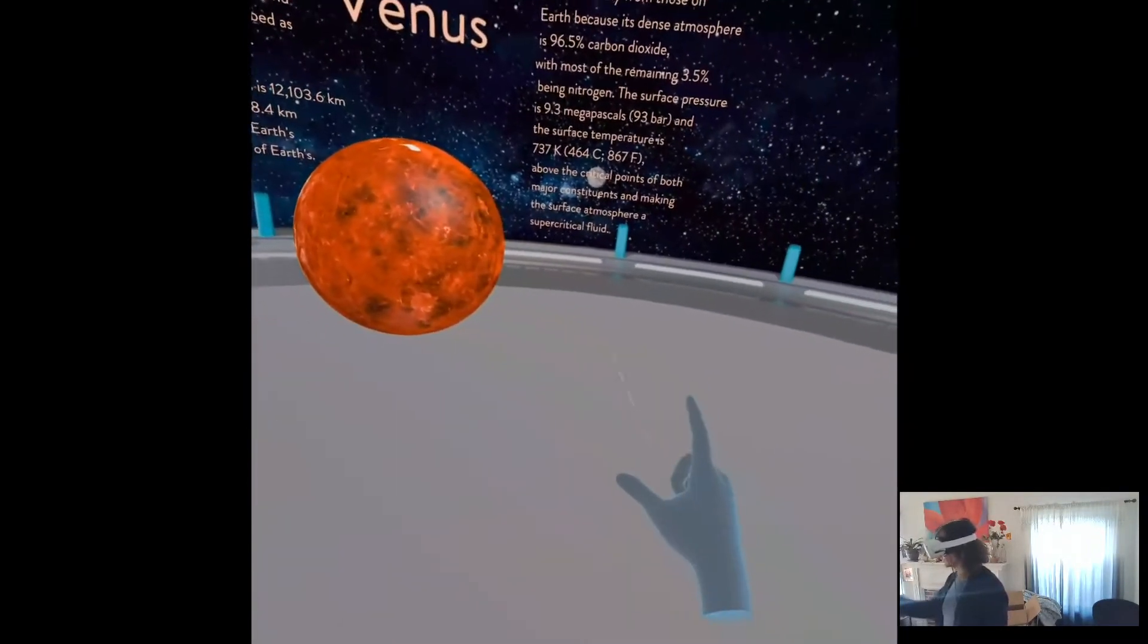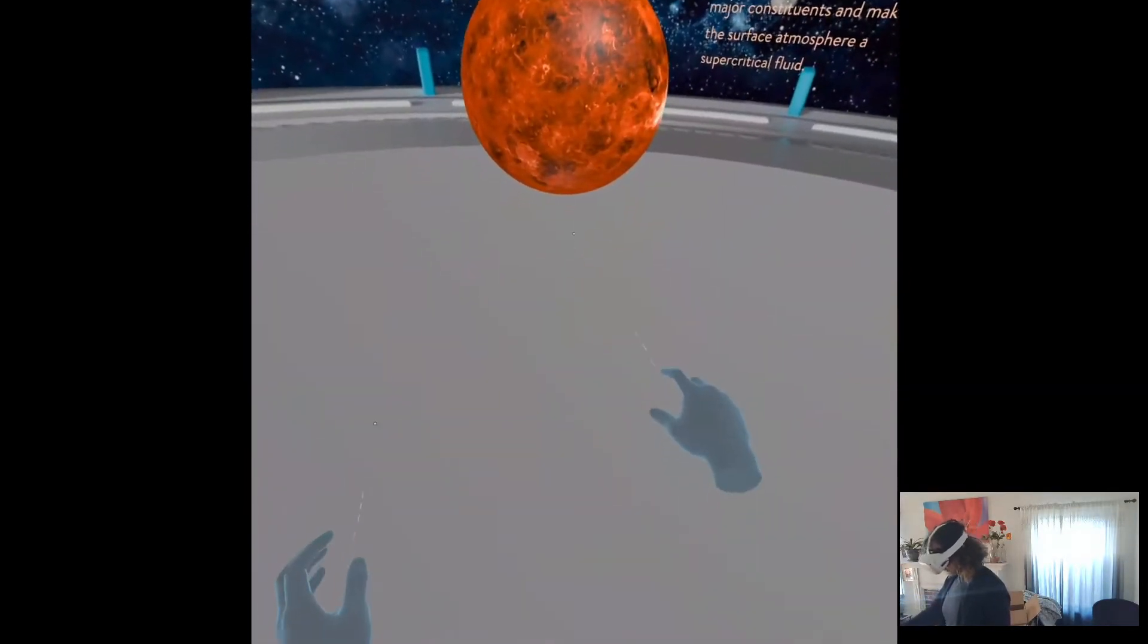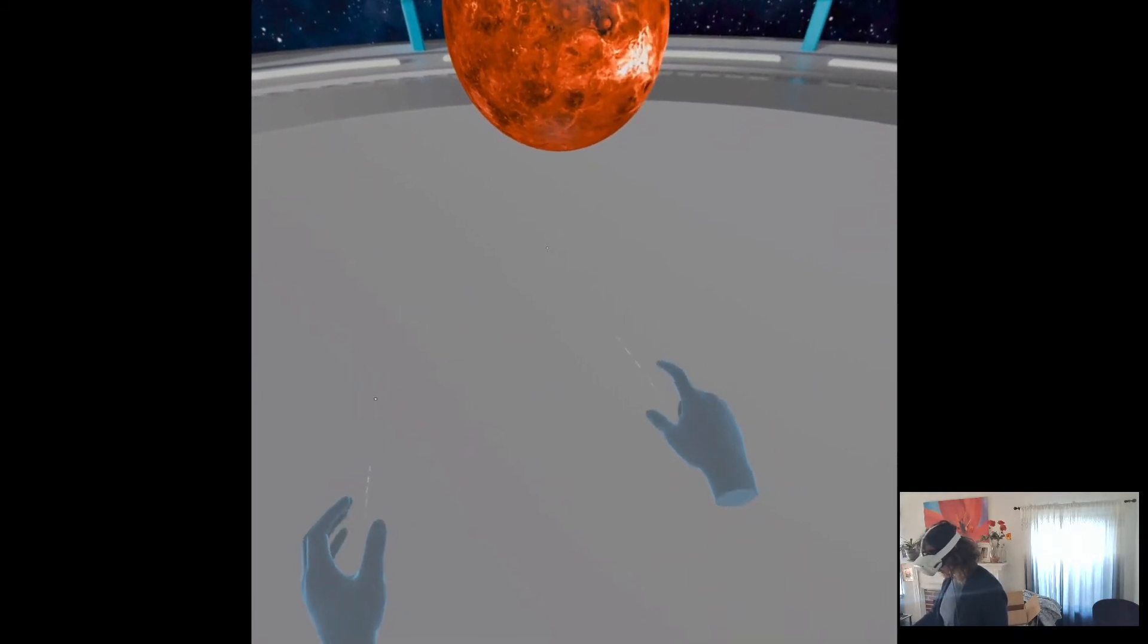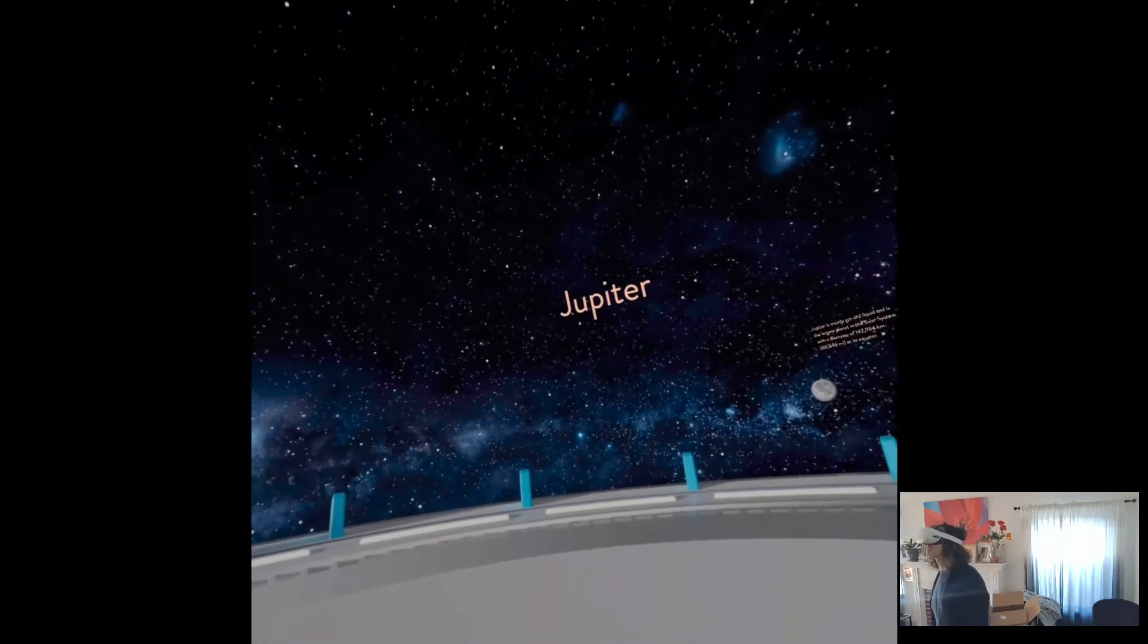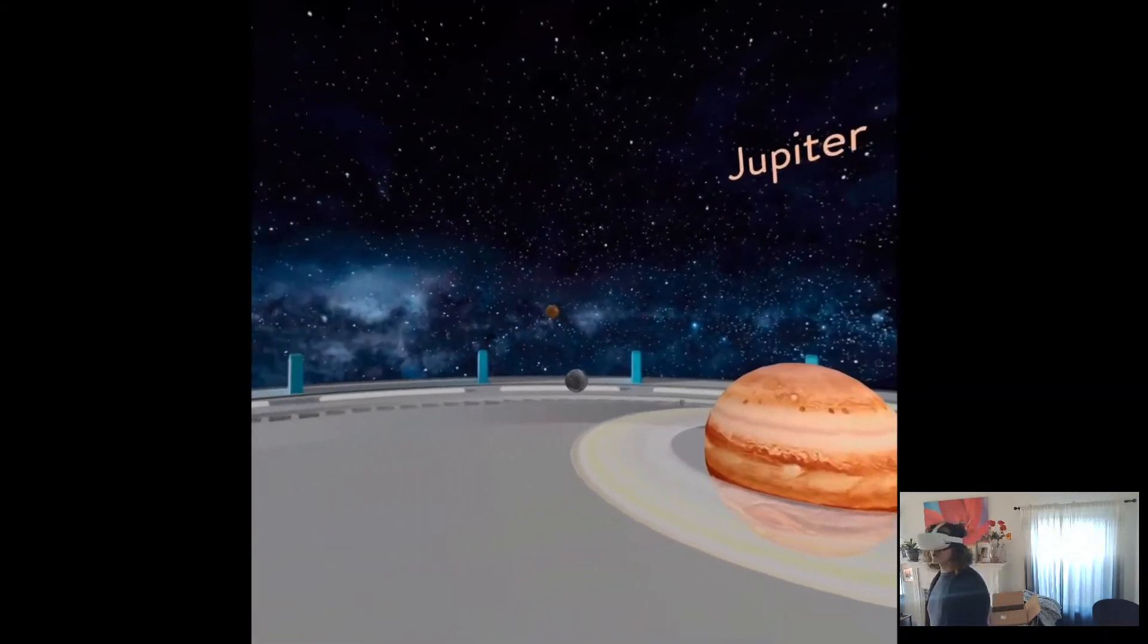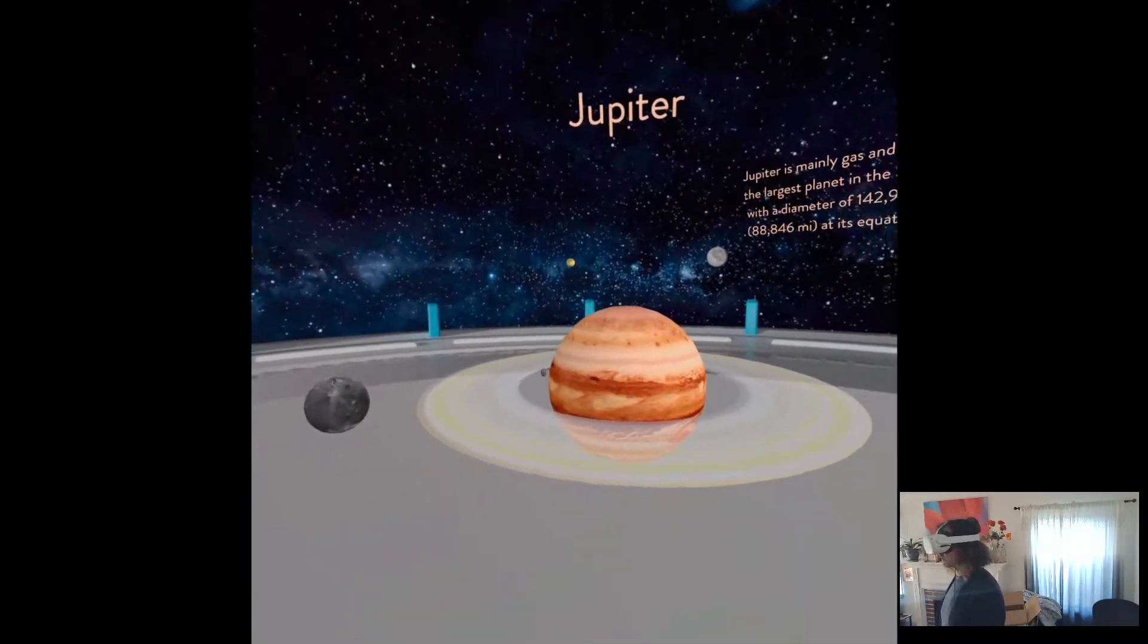When you're done with a slide and ready to move to the next, you do this little pinch with your index and thumb. You look at the floor and pinch like this. You know it worked because it changed slides. If you're tired of a slide, you can do that. At any point watch your hand—sometimes you do it by mistake.